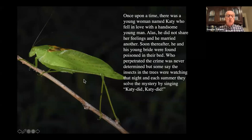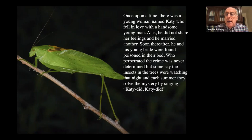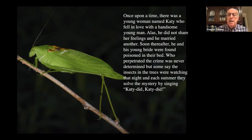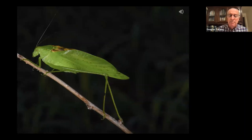Once upon a time — this is a true story — there was a woman named Katie who fell in love with a very handsome young man. Alas, he did not share her feelings and married another. Soon thereafter, he and his bride were found poisoned in their bed. Who perpetrated the crime was never determined, but some say the insects in the trees were watching. And each summer, they solved the mystery by singing: 'Katy-did, Katy-did.'